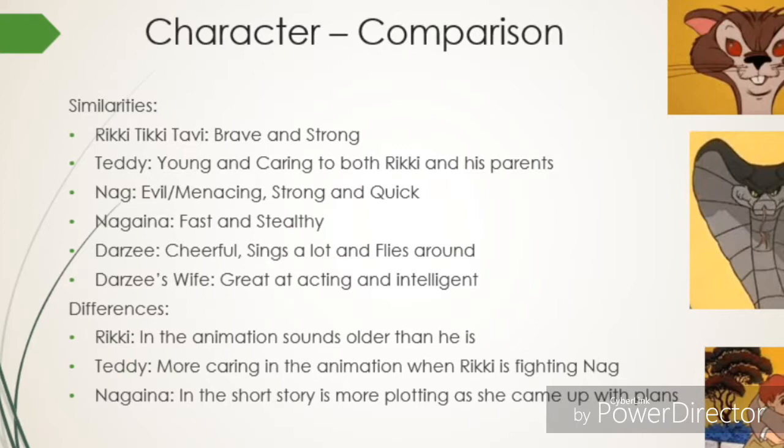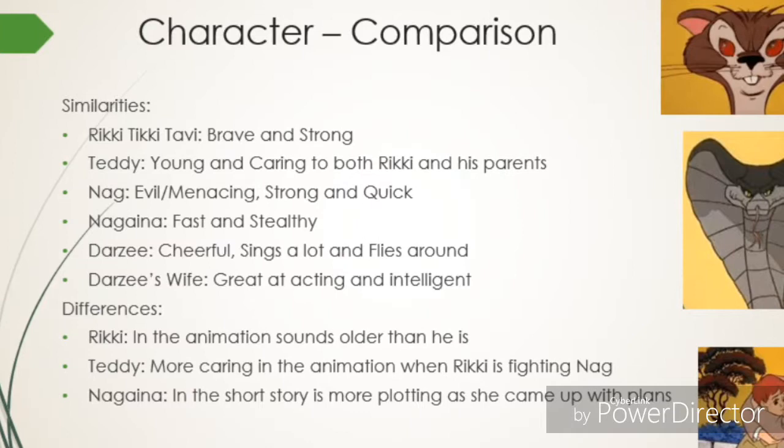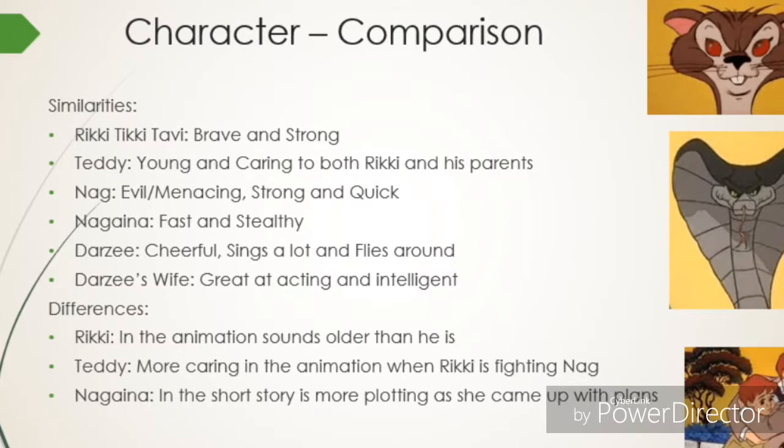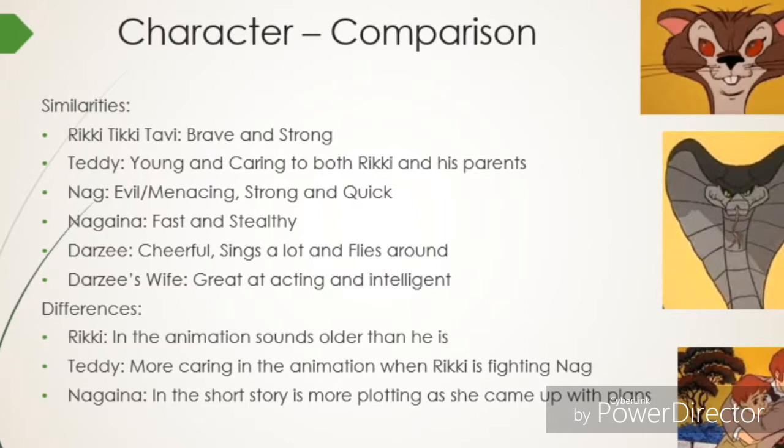Nag is very evil, and in the animation he is more plotting than in the short story, as he came up with a plan to strike Teddy and his parents when they walk into the bathroom. He is very strong and quick, but isn't as fast as Rikki, as he was soon defeated by Rikki and Teddy's father. Nagaina is very stealthy and fast, but in the short story she is very smart and great at making plans to attack Teddy and his parents.